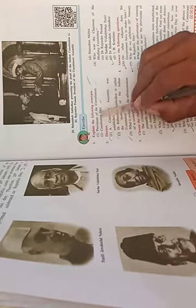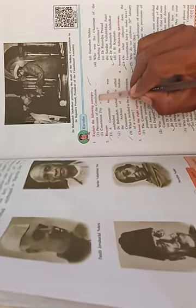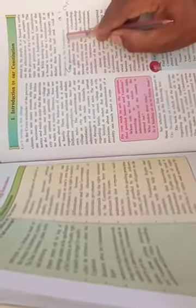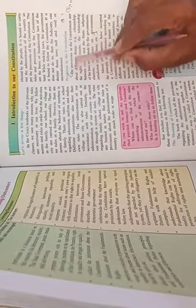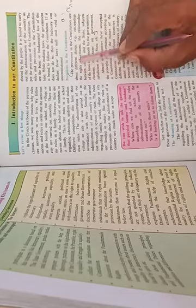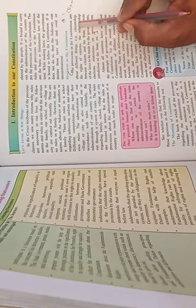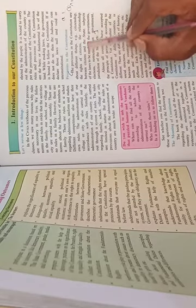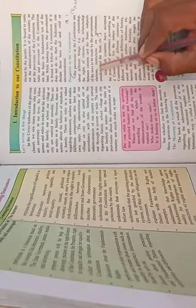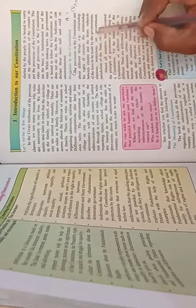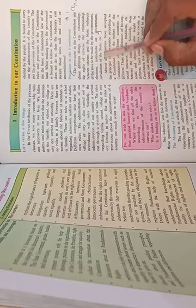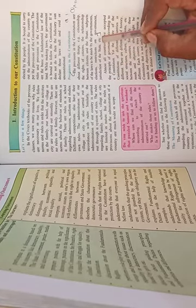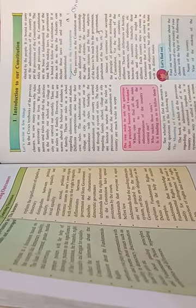First, the provisions of the constitution. The answer is: Provisions in the constitution are about different things. For example, citizenship, the rights of citizens, the relationship between citizens and the state, subjects of the laws to be made by the government, elections, restrictions on the government, jurisdiction of the state, etc. These are the provisions of the constitution.